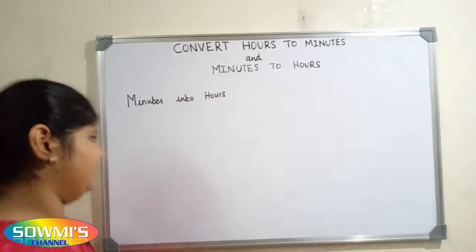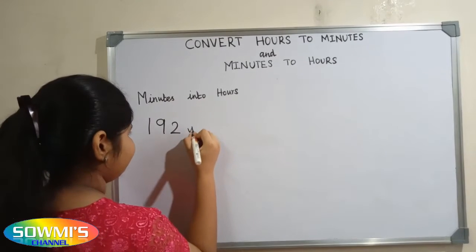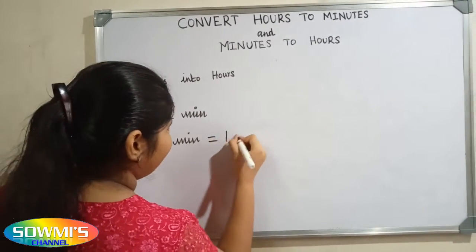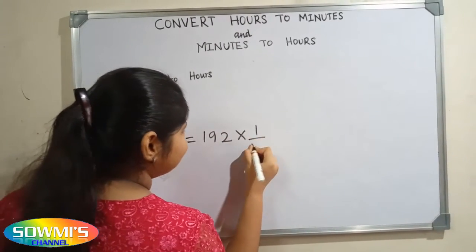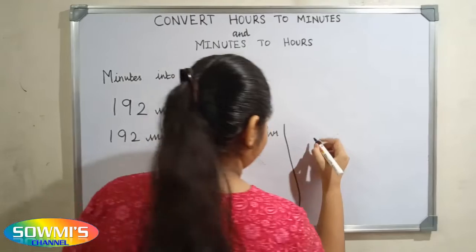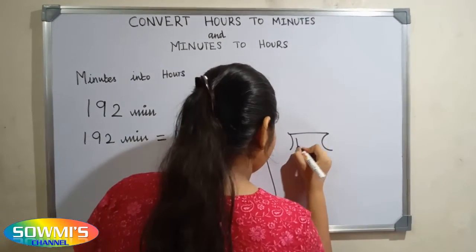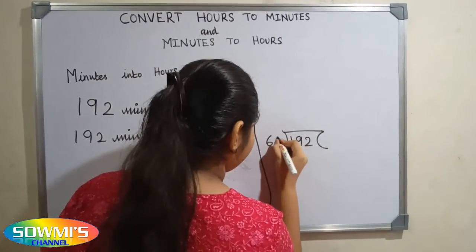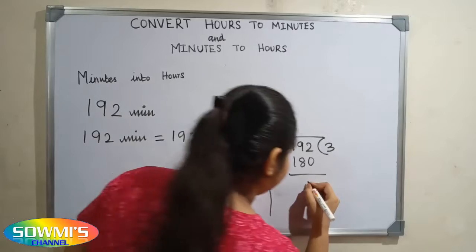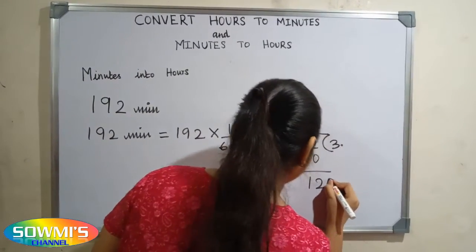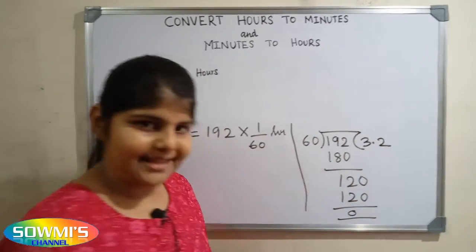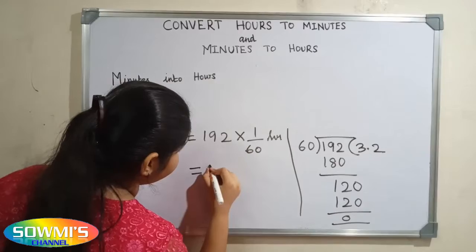Let us see one more example. 192 minutes. 192 minutes is equal to 192 multiplied by 1 by 60 hours, so we divide 192 by 60. 6 threes are 180, remainder 12. 60 twos are 120, remainder zero. So the answer is 3.2 hours.